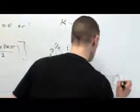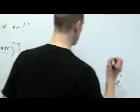So this is 2 to the 1 fourth, e to the i, what do we have? 9 pi over 8.